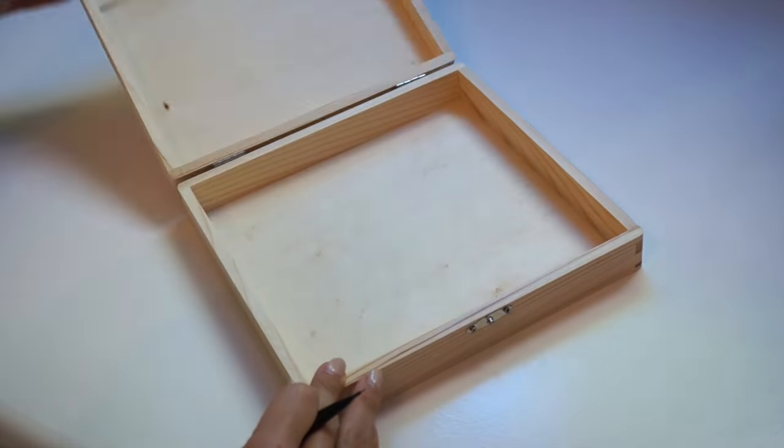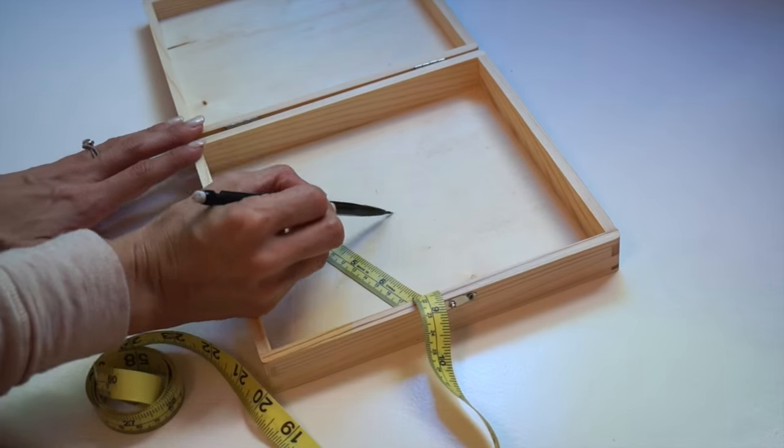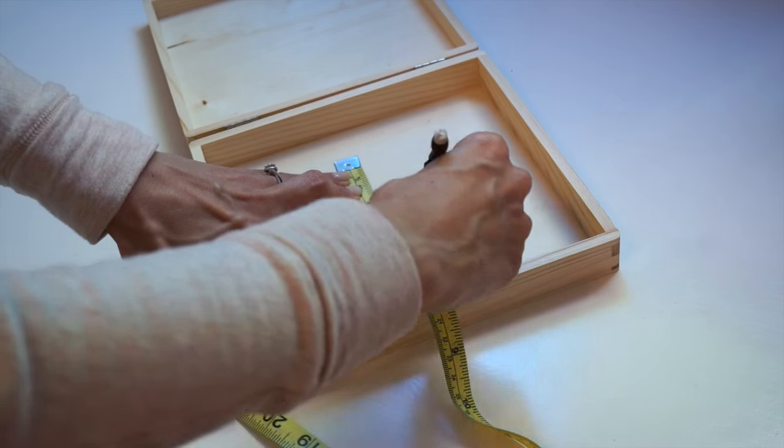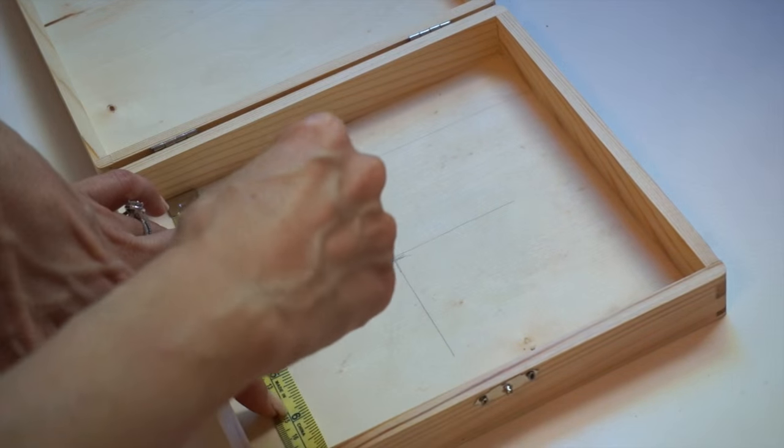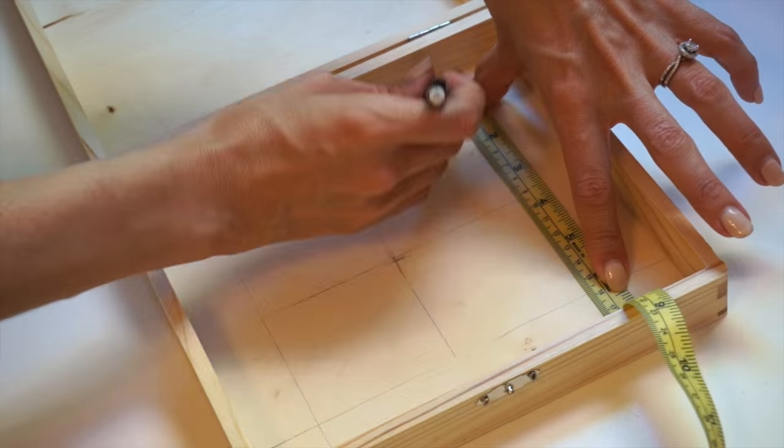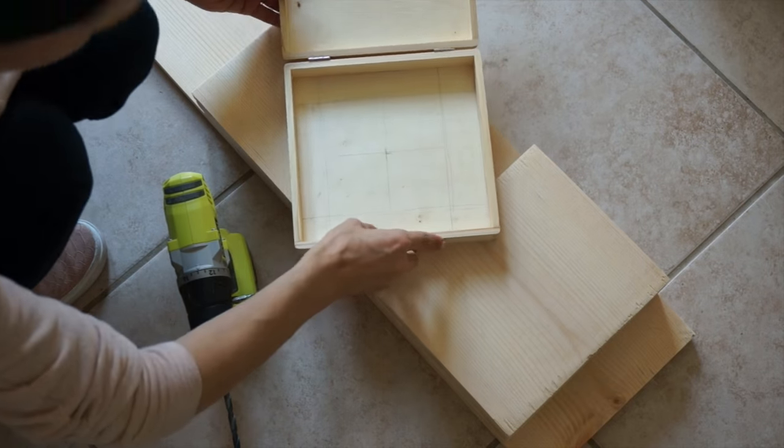Next step is marking the box. So the faceplate of the light switch was five by five inches and you're going to try to center that. Then get out your drill and make four holes in the corners of that square.